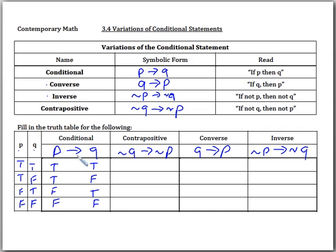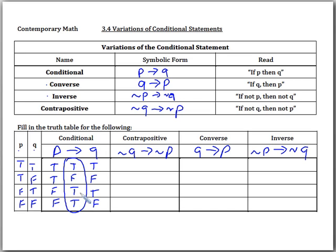If true then true is true. If true then false is false. If false then true is true. And if false then false, that's also true. So for the conditional statement, here is the answer to the truth table: true, false, true, true.